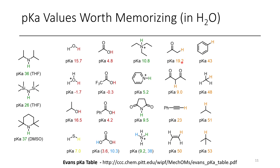Acetone has a pKa of 19.2. However, as soon as we add another electron-withdrawing group on the other position it becomes way more acidic — ten orders of magnitude more acidic. When we have 1,2- or 1,3-dicarbonyl species, these are way more acidic than a single carbonyl-containing compound. Phenylacetylene has a relatively low pKa compared to other C–H bonds, with a pKa of 23. Ethylene has a pKa of 50 and is not a very good acid at all. Benzene comparatively has a pKa of 43.